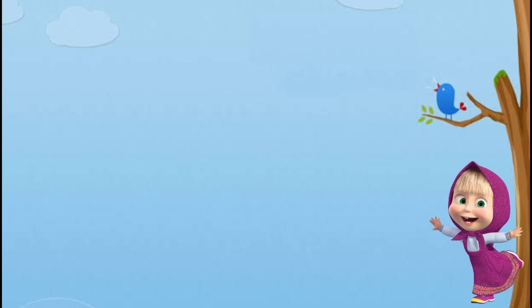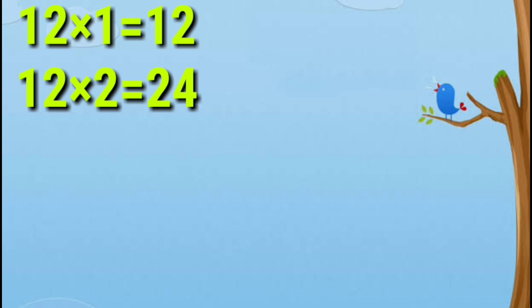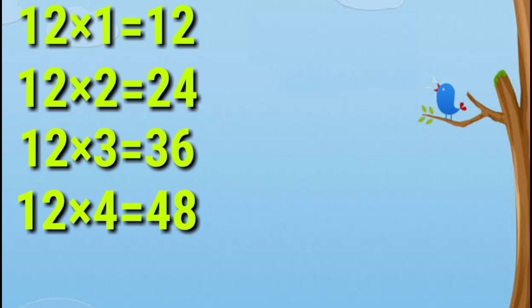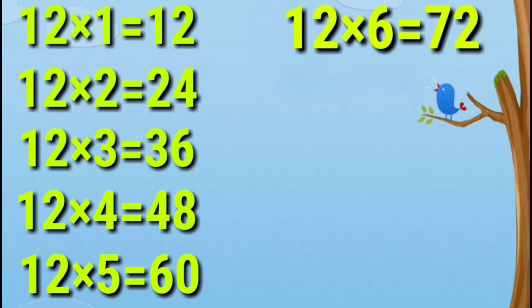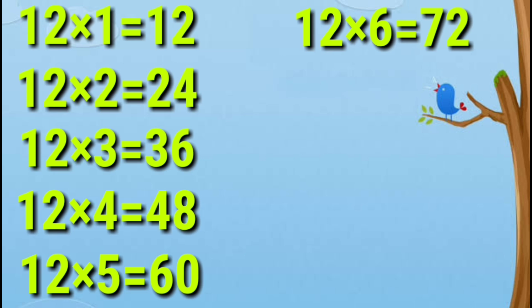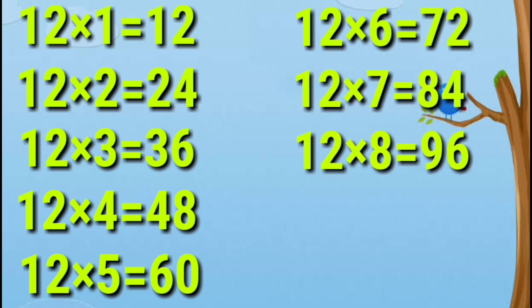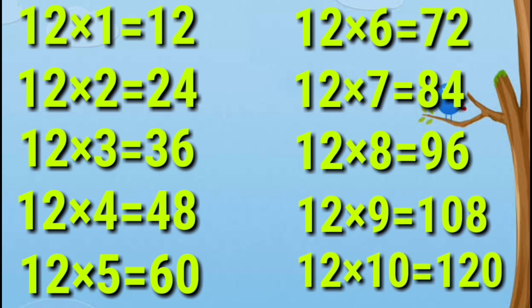12 ones are 12. 12 twos are 24. 12 threes are 36. 12 fours are 48. 12 fives are 60. 12 sixes are 72. 12 sevens are 84. 12 eights are 96. 12 nines are 108. 12 tens are 120.